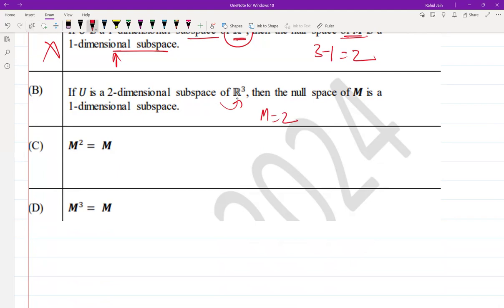And dimension of null space will be 3 minus 2 equal to 1. Thus M is a one-dimensional space. It is true.